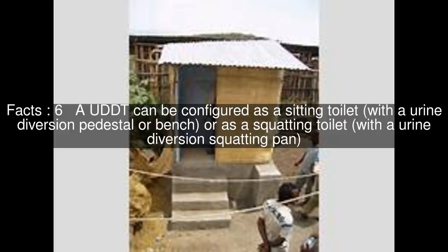A UDDT can be configured as a sitting toilet with a urine diversion pedestal or bench, or as a squatting toilet with a urine diversion squatting pan.